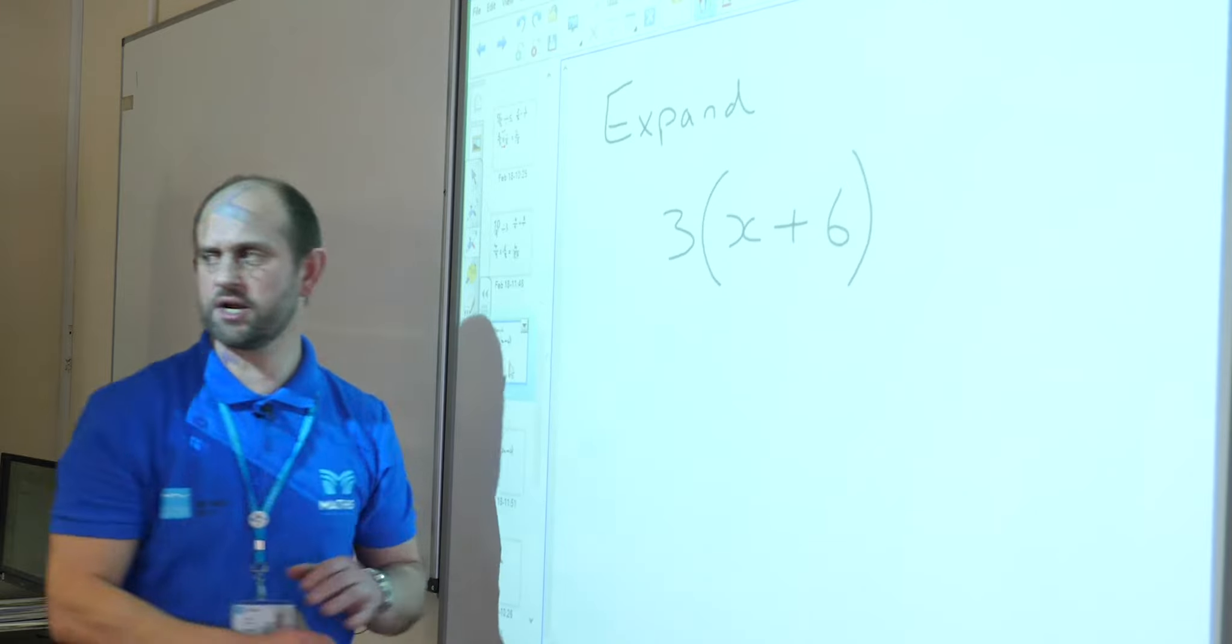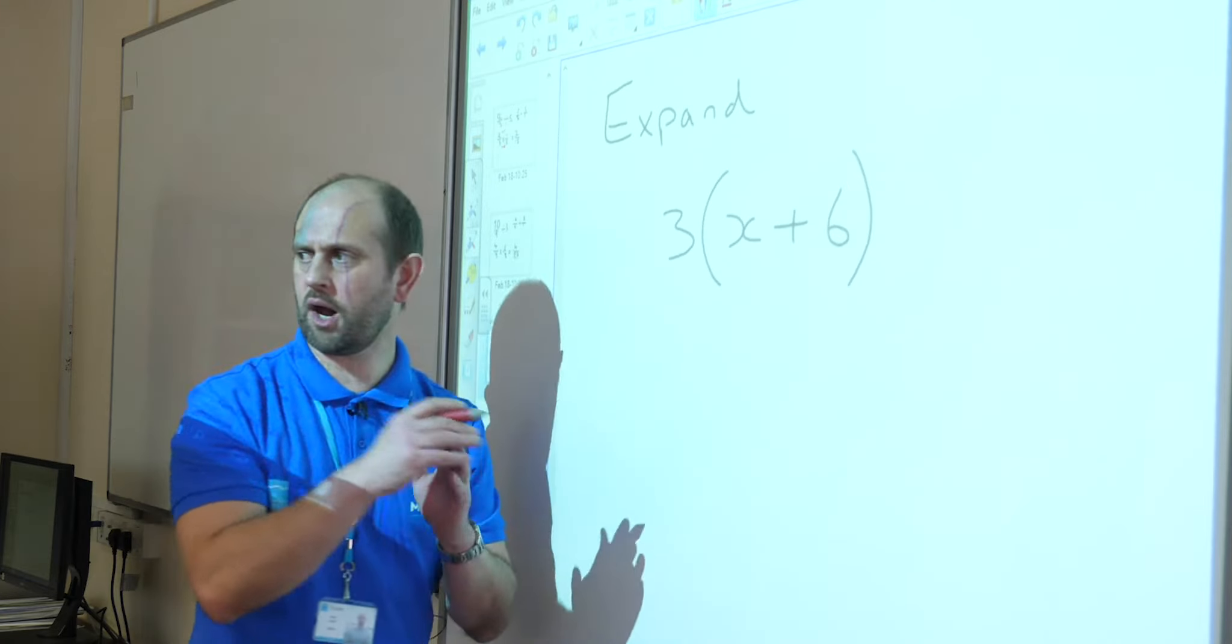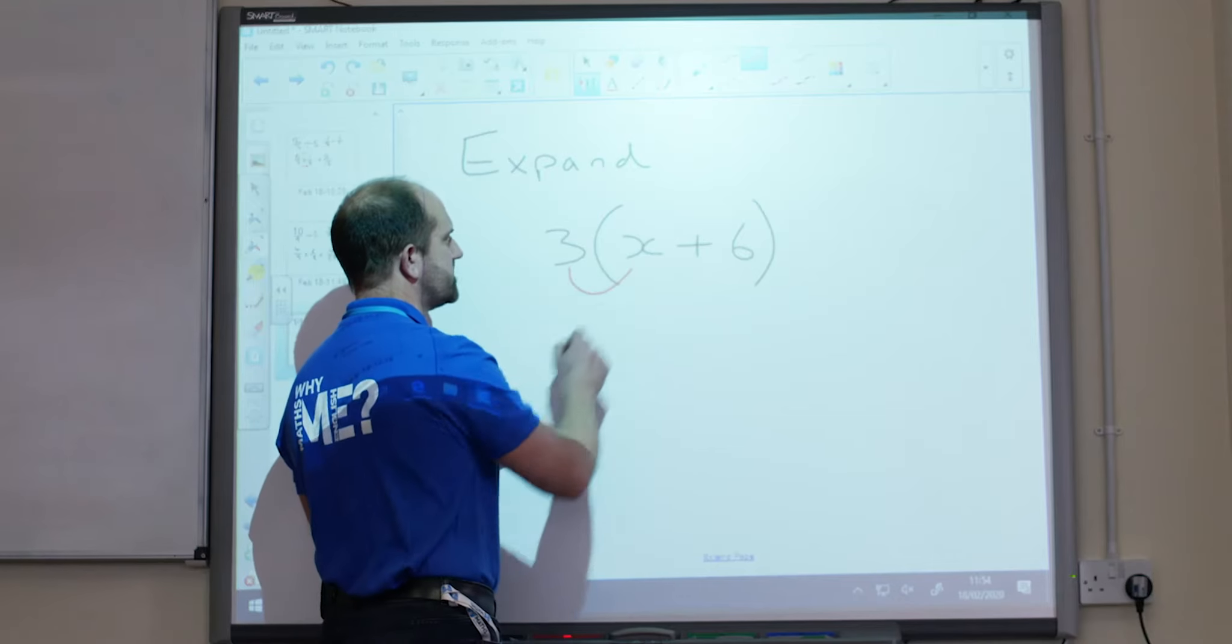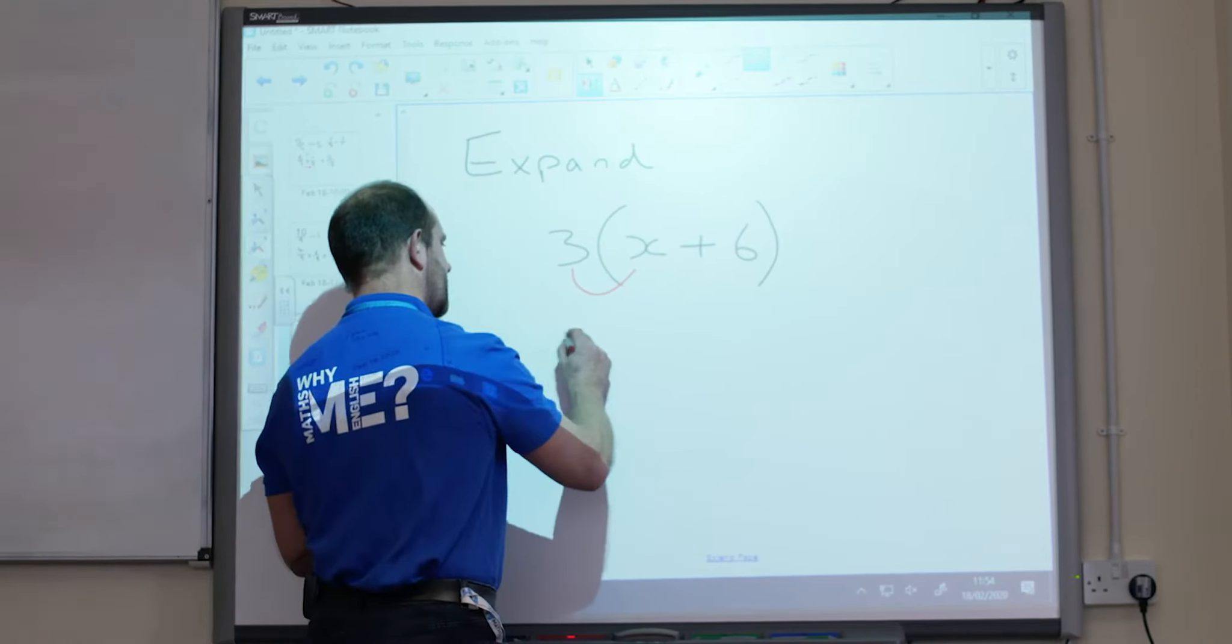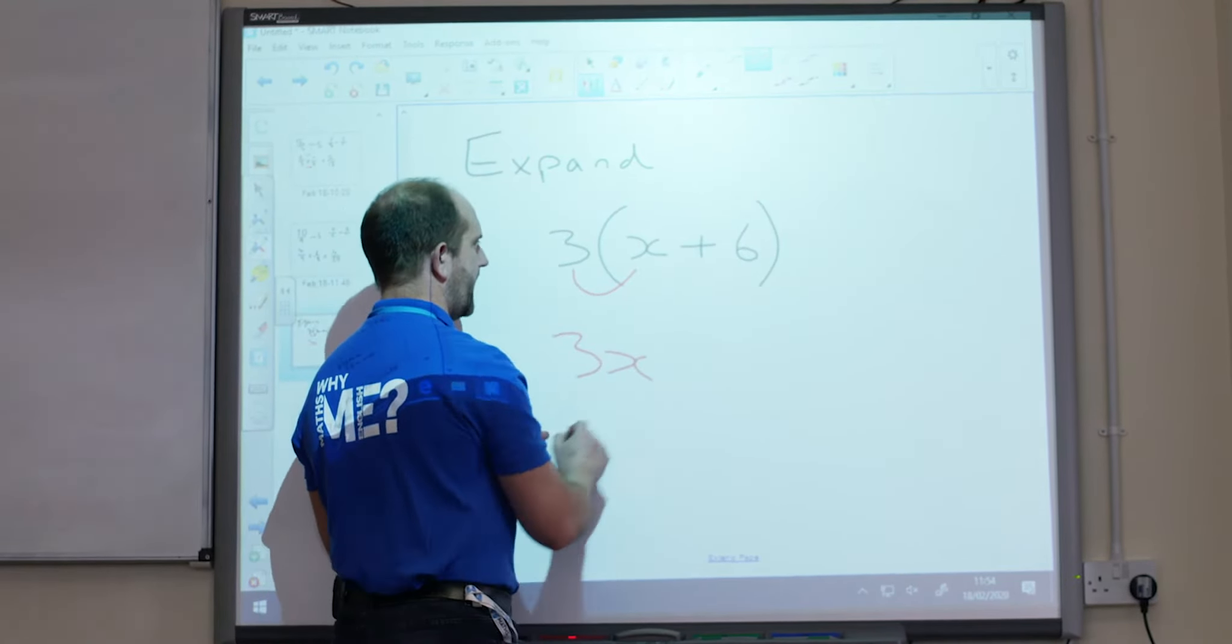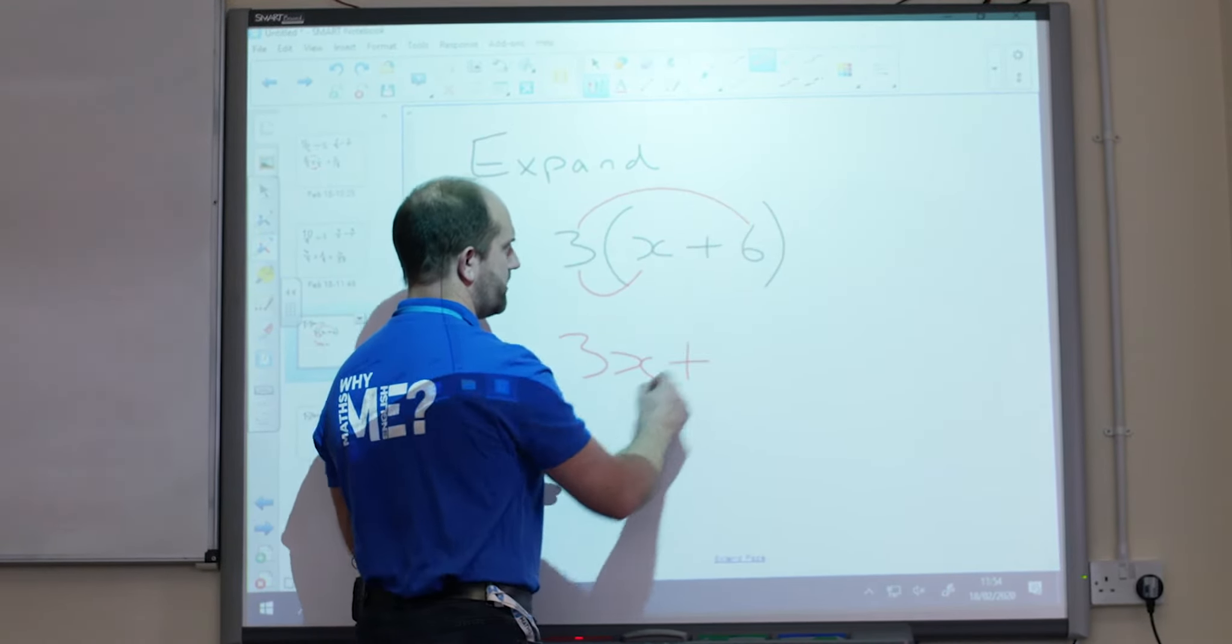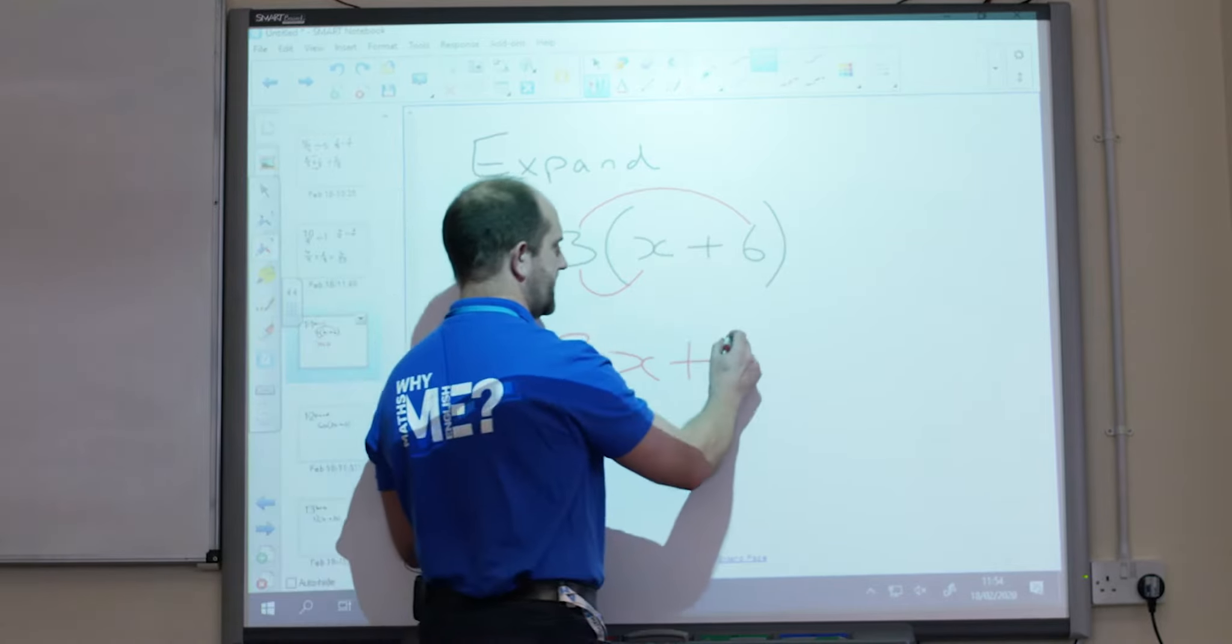And to do this, I'm actually going to draw in the lines of what I'm going to be multiplying. So here I've got 3 times x, so that gives me 3x. My next one then is 3 times plus 6, so it's going to be plus 3 times 6, which is 18.